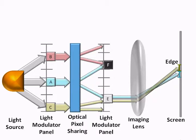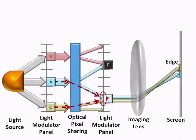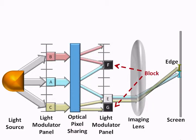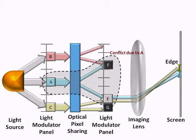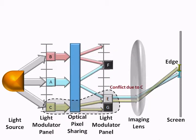Each pixel of the first panel controls several non-adjacent small pixels on the second light modulator panel, while the second panel controls several adjacent small pixels of the final image. Using such a shared control, we can create a higher density of pixels at E by lighting A and C in the first panel. However, F and G need to be blocked since they receive copies of A and C. This means we cannot show both E and F at higher resolution simultaneously — we call this a conflict due to sharing of A. Similarly, E and G are in conflict due to the sharing of C.